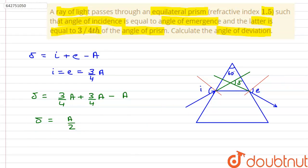And it is given in the equation that the angle of prism which is a is equal to 60 degrees. Therefore, delta equals 60 by 2. This implies that delta equals 30.